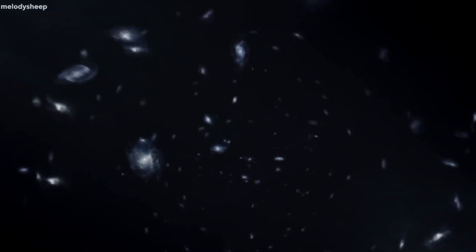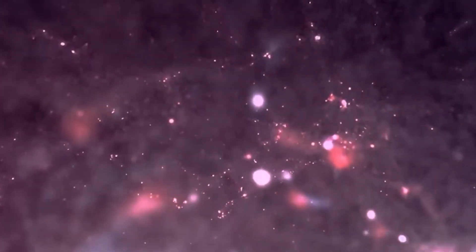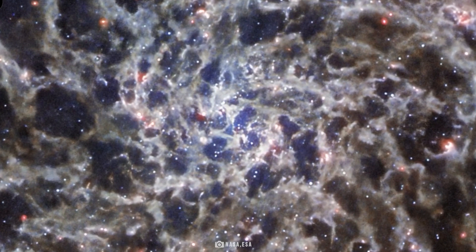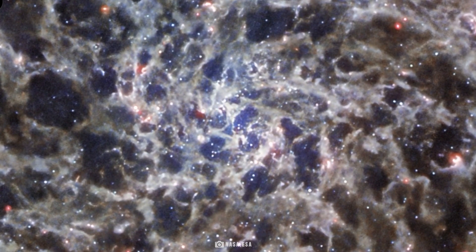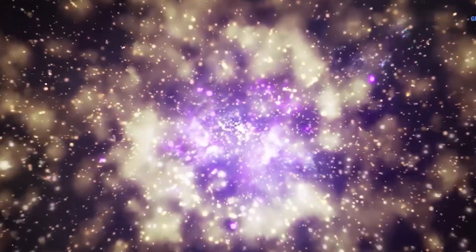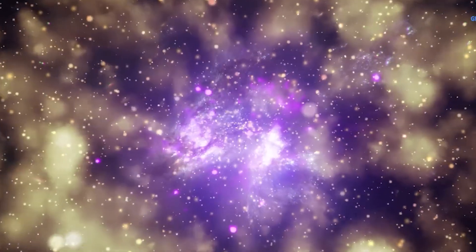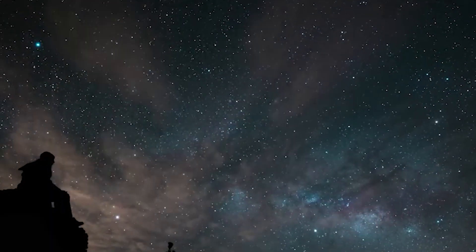Thousands of galaxies can be seen in the image, the faintest of which are approximately one billion times fainter than what the naked eye can see. The light from the farthest galaxies has traveled nearly 13.5 billion years to reach us.